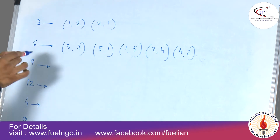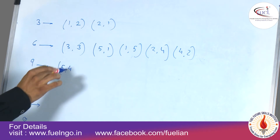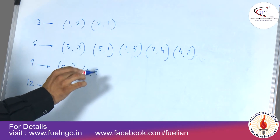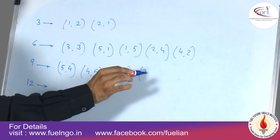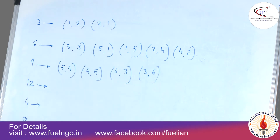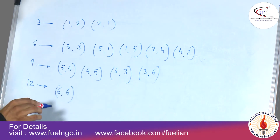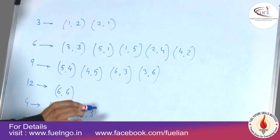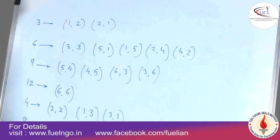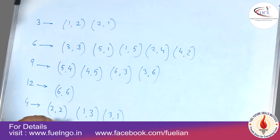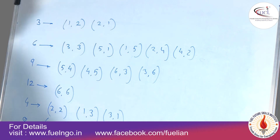If I want nine, I can get it as (5,4), (4,5), (6,3), or (3,6). For twelve, there is only one way: (6,6). For four, I can have (2,2), (1,3), or (3,1). For eight, I can have (6,2), (2,6), (5,3), (3,5), or (4,4).